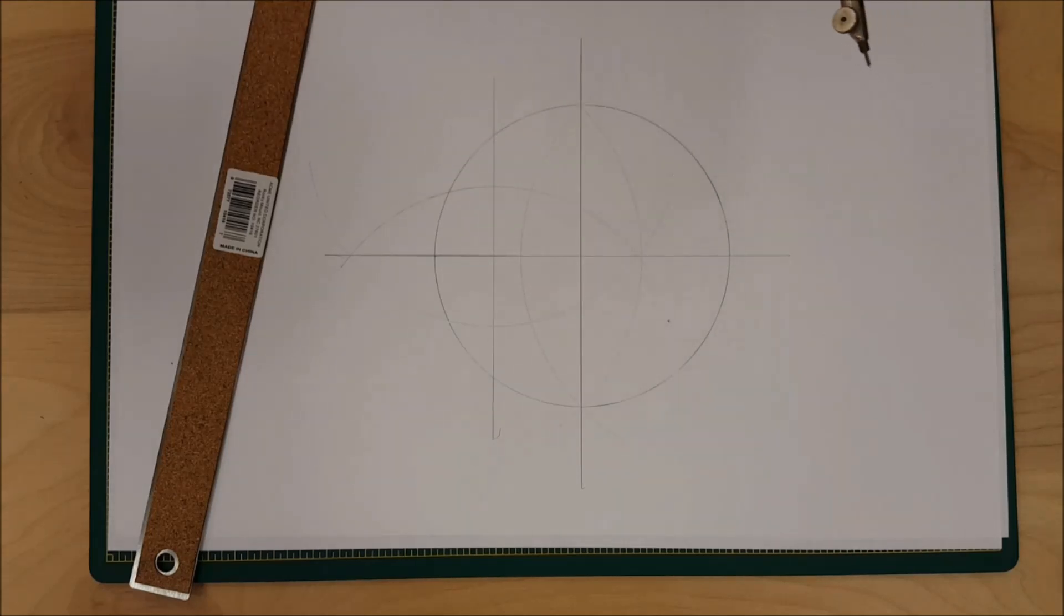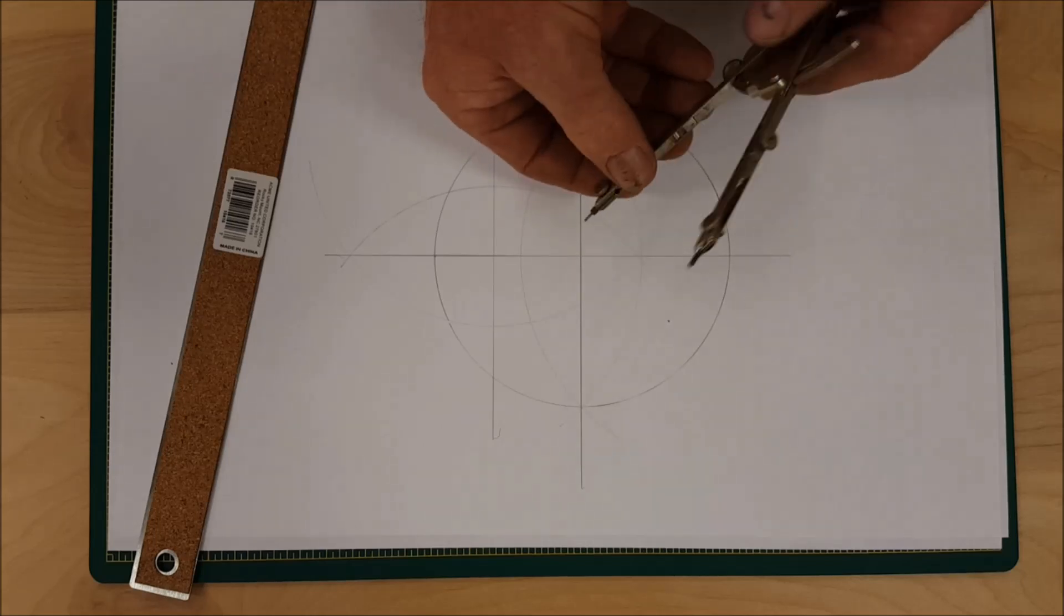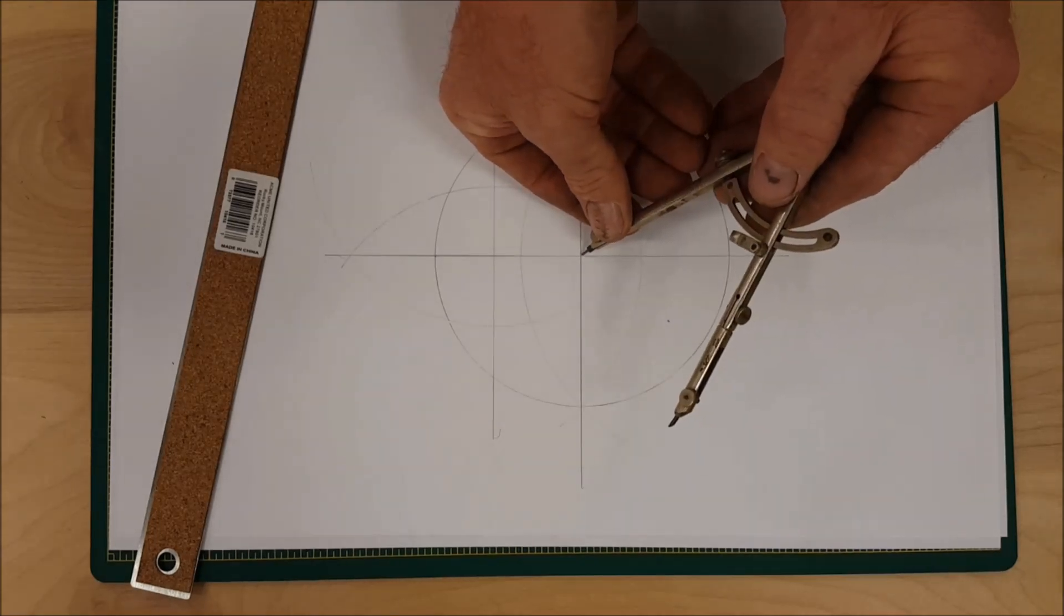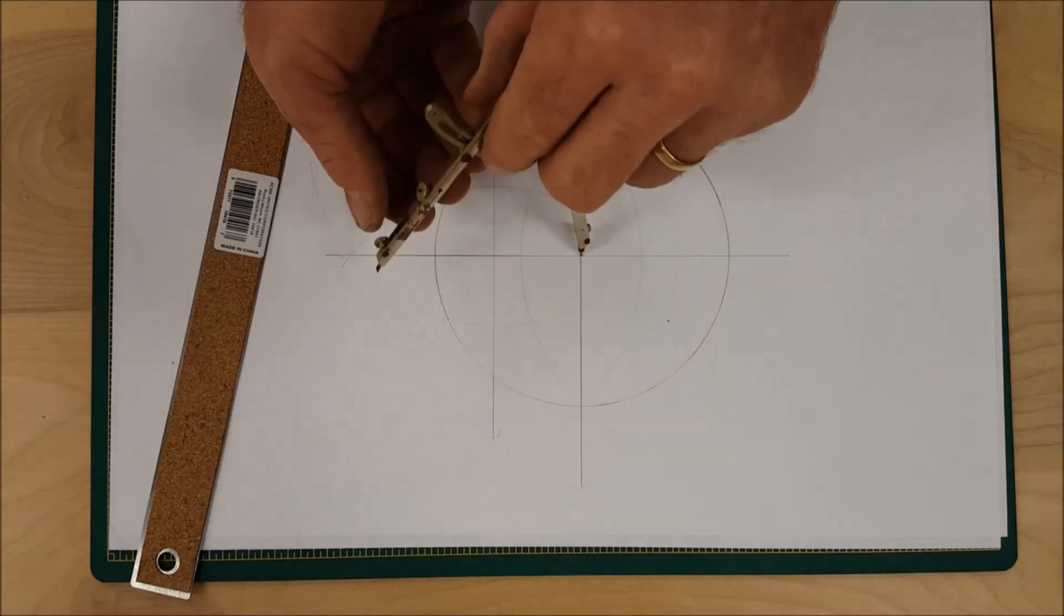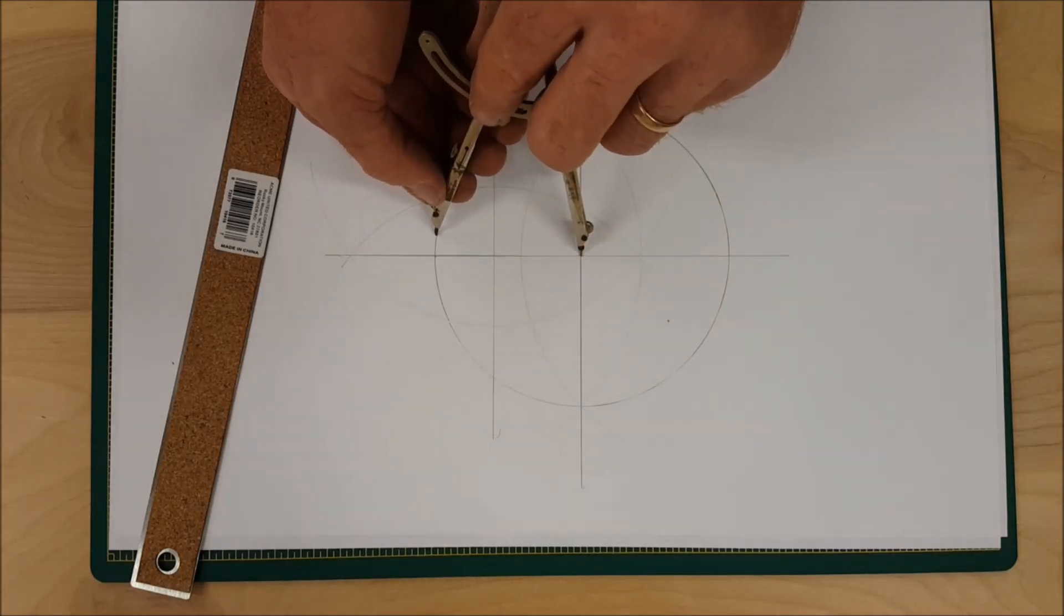And we can check that by putting the pivot of the compass in the crosshair and adjusting the compass.